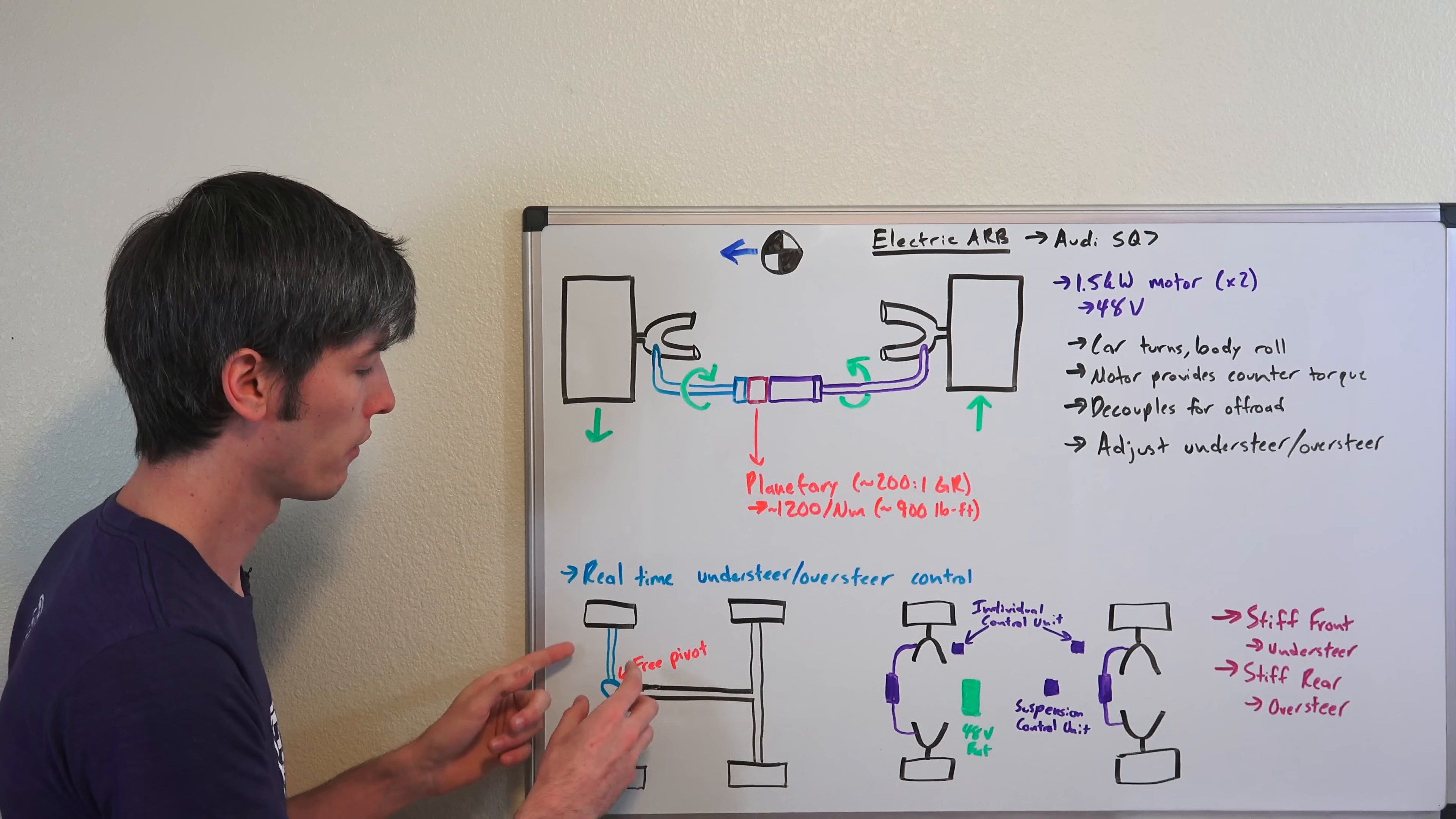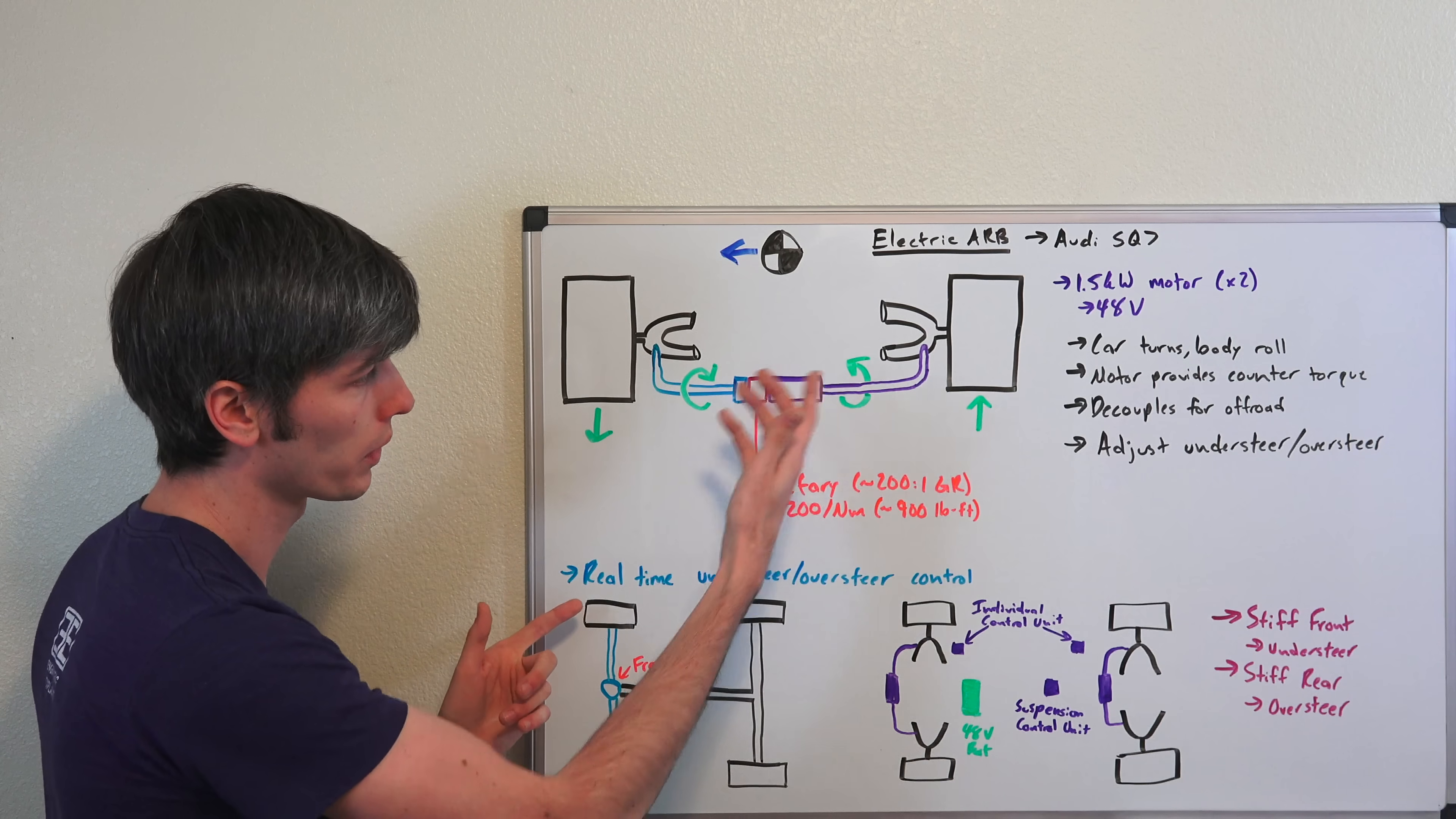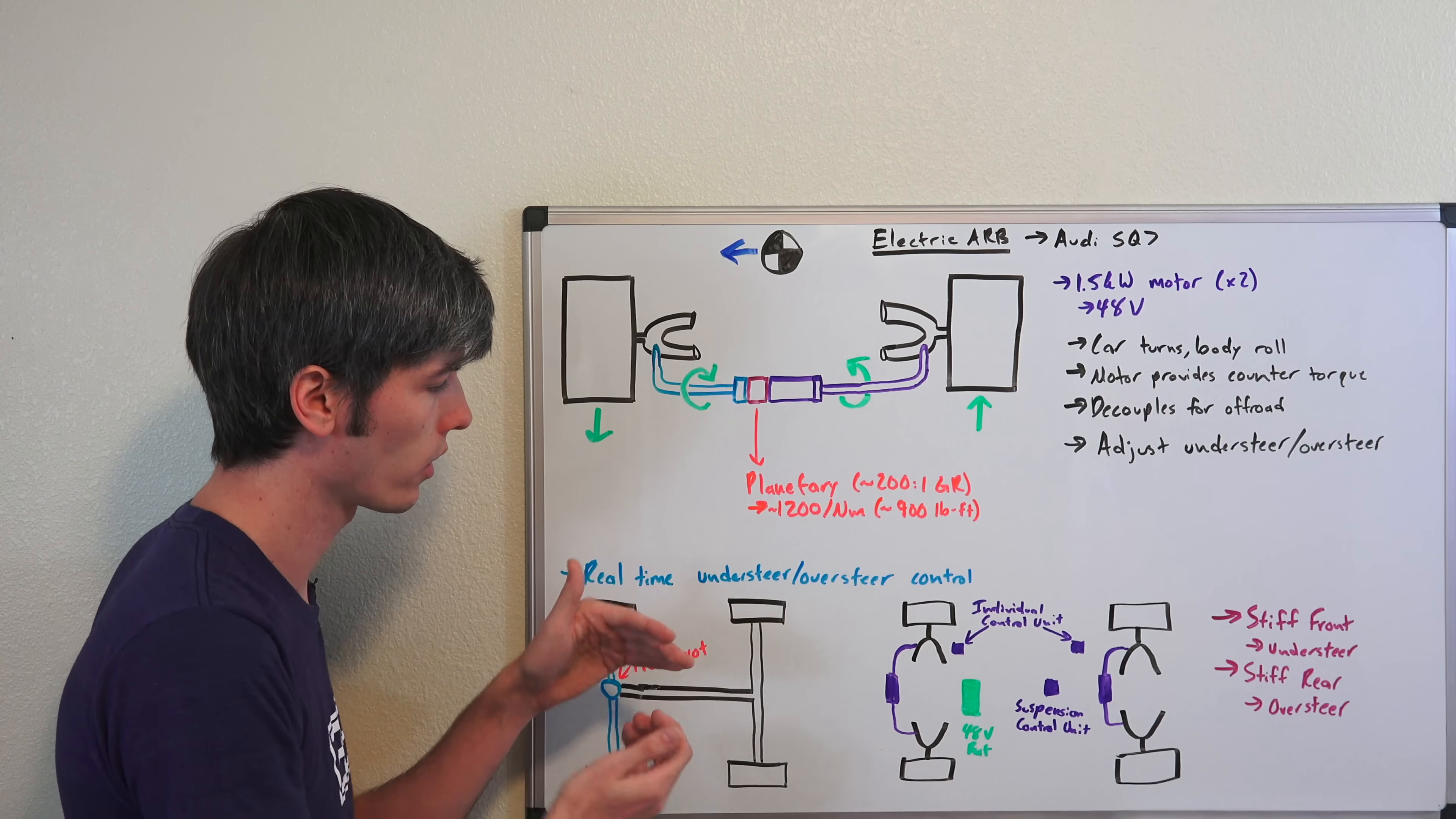If you do the opposite—if you have a super stiff rear anti-roll bar—then of course you're going to overload that rear, and the rear is going to want to slide out on you because it's got too much load transfer.